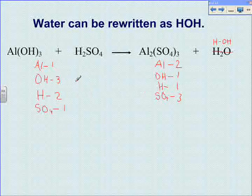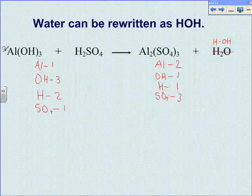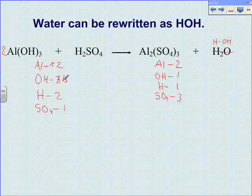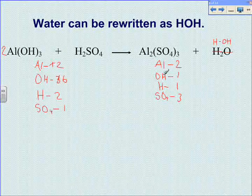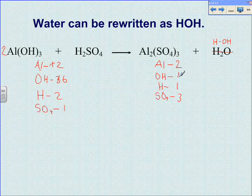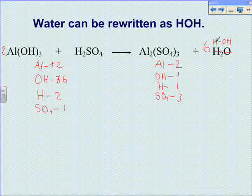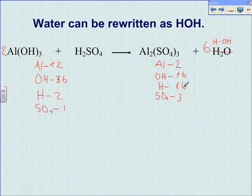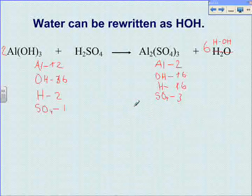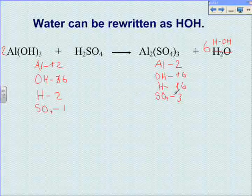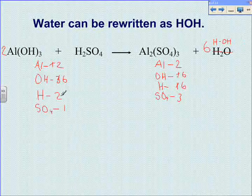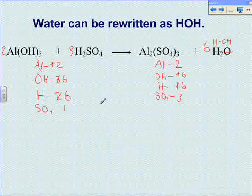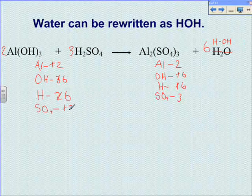So we start to make it balanced. We have one aluminum on the left and two on the right, so we put a two before the aluminum. That changes the aluminum to two and the hydroxide to six. Now we have six hydroxides on the left side and only one on the right, so we put a six before our water, or HOH, which gives us six hydroxides and six hydrogens. Now the only thing we have left to balance is the sulfuric acid. We have six hydrogens on the right but only two on the left, so if we put a three before this compound, that fixes it.